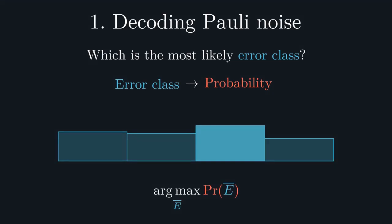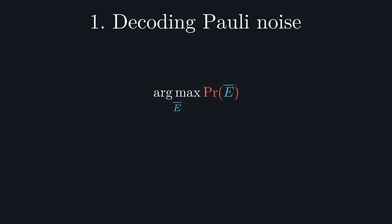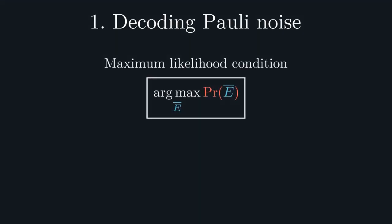For Pauli errors, this approach is in fact optimal, and it is known as maximum likelihood decoding. From a practical perspective, the most difficult part of maximum likelihood decoding is evaluating these error class probabilities. We can see this by expanding their definition, which involves a sum of all degenerate errors within each class.